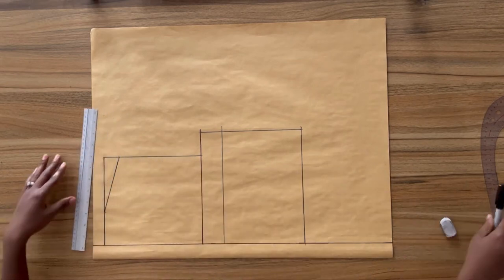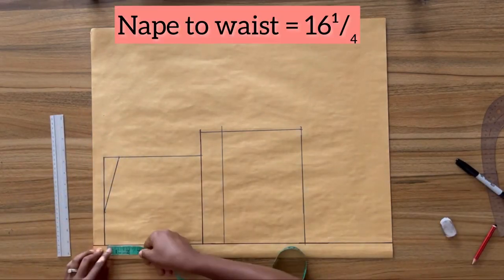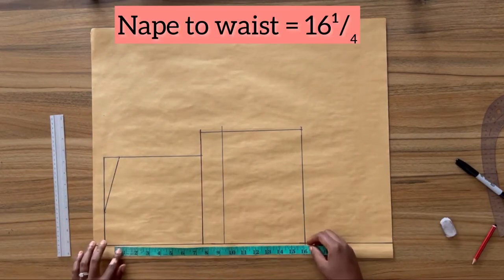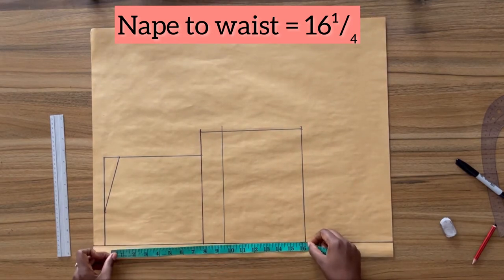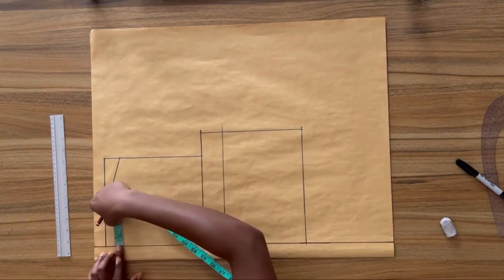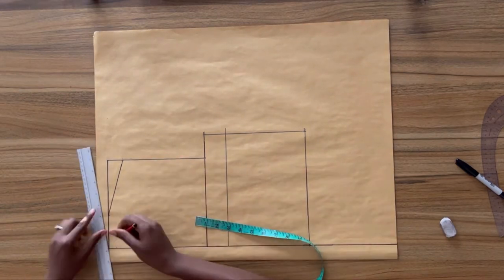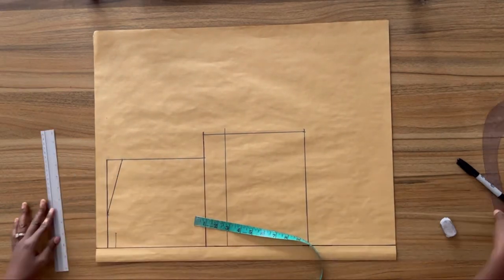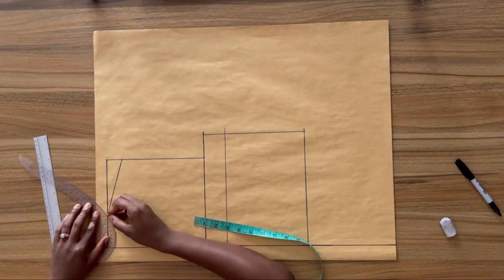For the back neckline, I'm going to measure upward from the waistline my nip-to-waist measurement, which is 16 and a quarter inches. From this point, I'll come in one inch and draw out a straight line to that one-inch mark, then use my French curve to complete the neck curve of the back neckline.